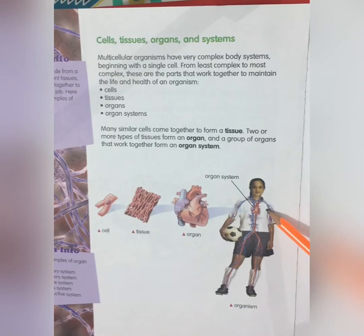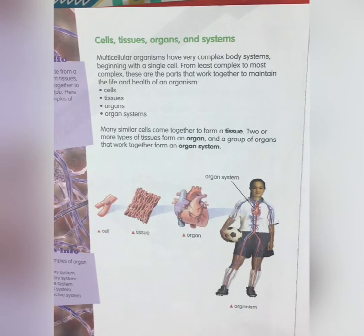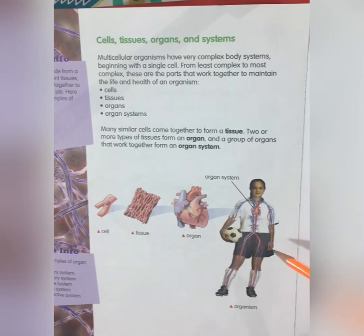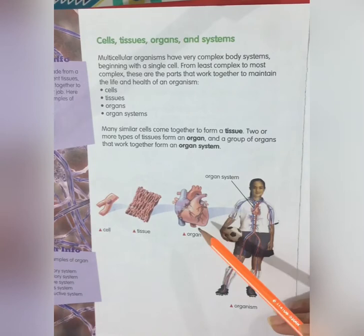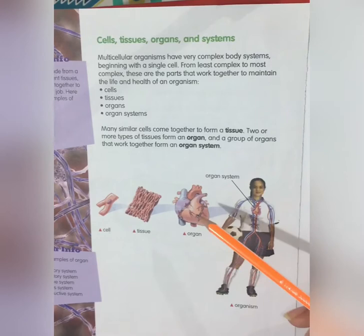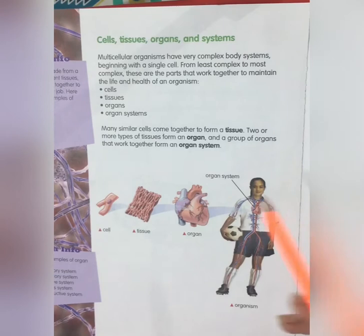As you can see, this picture of a human being is considered an organism. As we discussed before, human beings, animals, and plants are examples of multicellular organisms. It is very clear now that an organ is made from a group of different tissues which all work together to do a particular job.